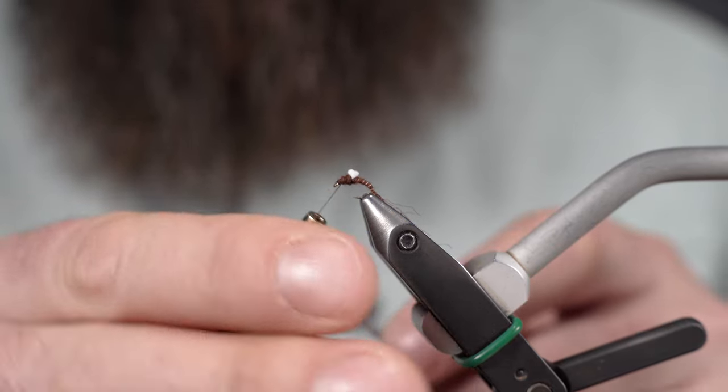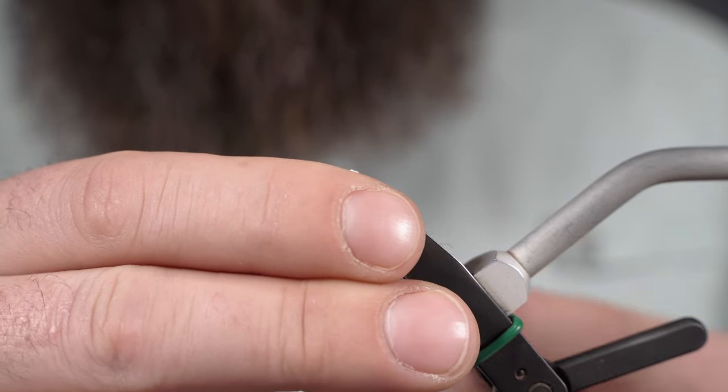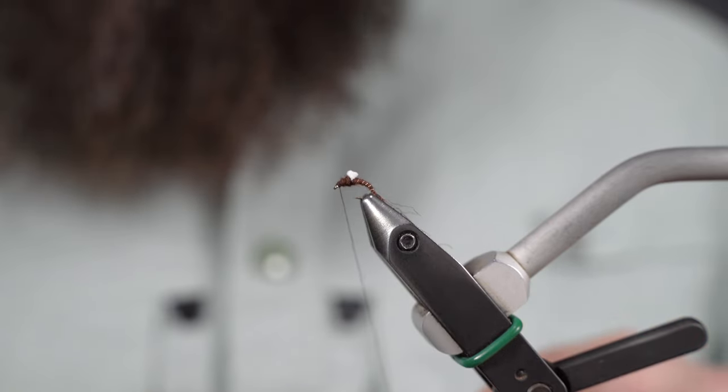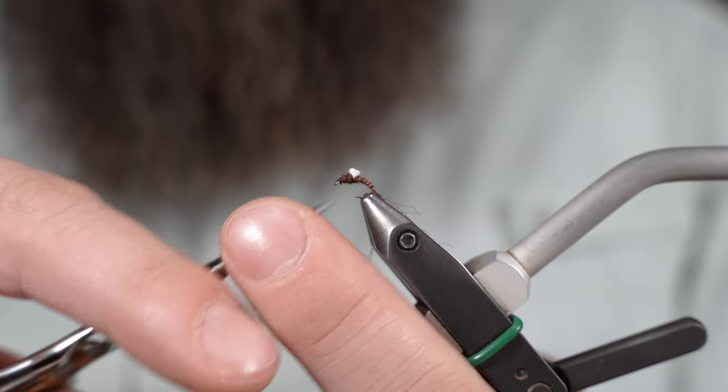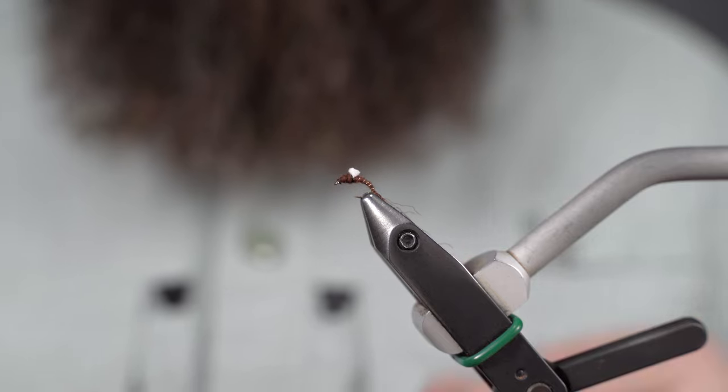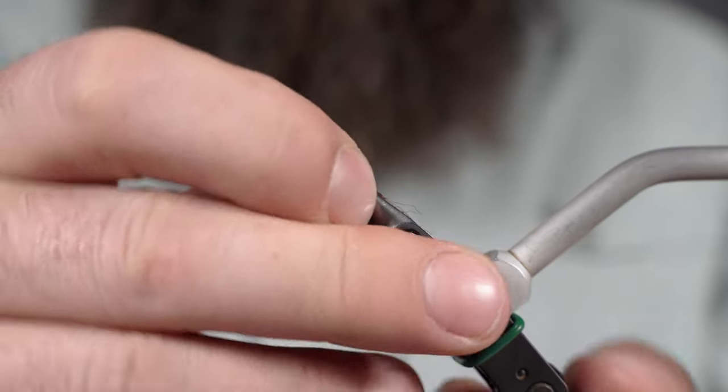I feel like a lot more single knots keep that head from coming apart on a fly this small. And then trim our thread off and then last but not least.